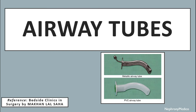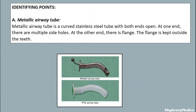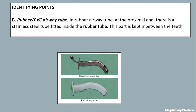Hello and welcome. Let's talk about airway tubes. Here is a figure of a metallic airway tube and a PVC airway tube. The identifying points of a metallic airway tube: it is a curved stainless steel tube with both ends open. At one end there are multiple side holes, and at the other end there is a flange. The flange is kept outside the teeth.